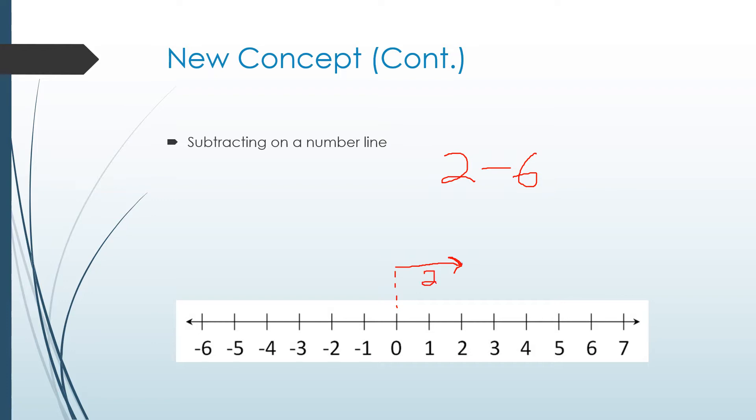And then we're going to draw another dotted line up from the end of the arrow. And then we're going to go six to the left, because we're subtracting. Subtraction always means moving left on the number line. So we're going to go six to the left. So it'll be one, two, three, four, five, six. We're going to put this here. And then we'll just draw a dotted line down here, see where we ended up. And you see we ended up at negative four. So the answer to this would be negative four.